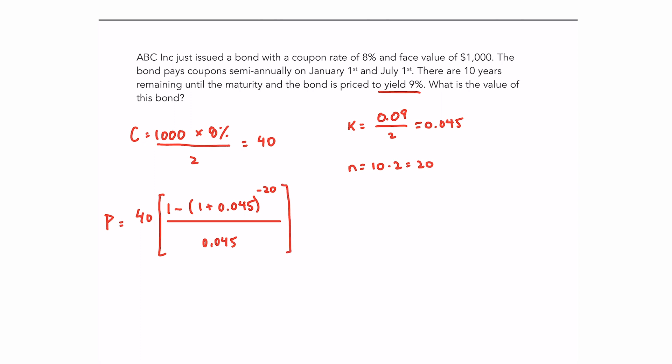So that is the annuity portion, that is for the coupon payment, plus the face value discounted back at 4.5% for 20 periods. And that is to account for the face value. So you should get a price of $934.96.